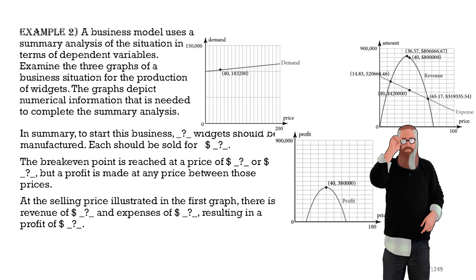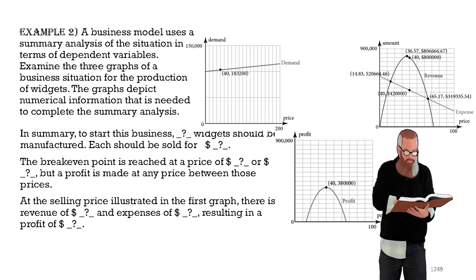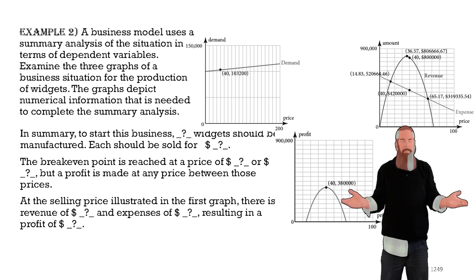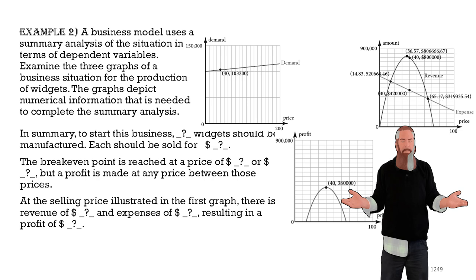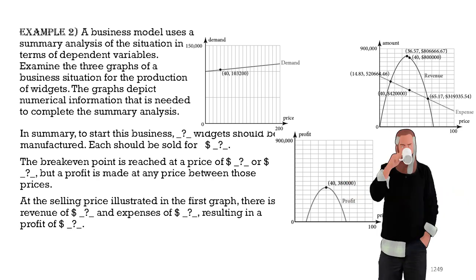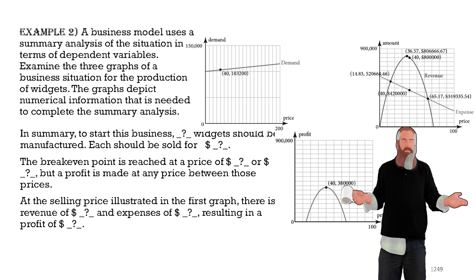In summary, to start this business, 103,200 widgets should be manufactured. Each should be sold for 40 dollars. The break-even point is reached at a price of 14 dollars 83 cents or 65 dollars 17 cents. But, a profit is made at any price between those prices.